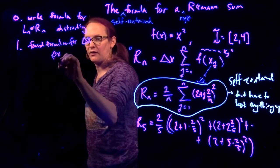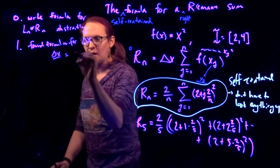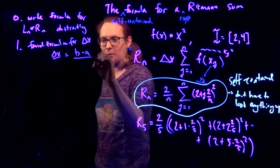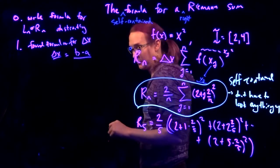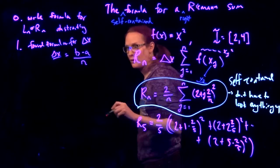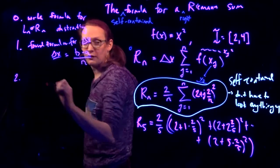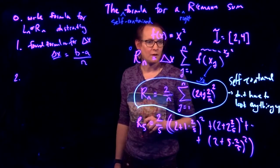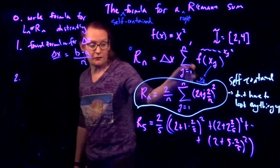Well, delta x is equal to the width of the total interval over which I'm estimating. I'm estimating from A to B. And then how many pieces am I dividing it into?